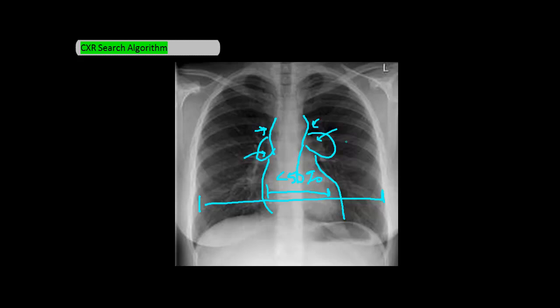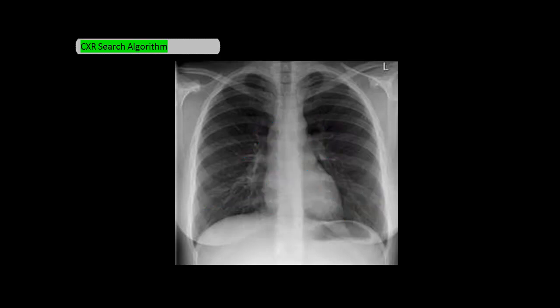Now let's talk about D, or diaphragm. The two diaphragms should be sharp, as I'm drawing out here, and you want to look underneath the diaphragm to see if there's any air — if there is, you'll see an area that's darker than in this film. The right diaphragm is normally a bit more elevated than the left, and that's normal. You just want to check there isn't extreme asymmetry between the two. You should also be able to see the air bubble inside the stomach, which is right here.